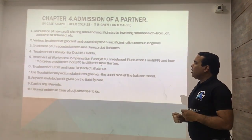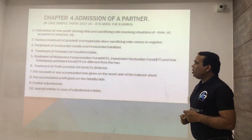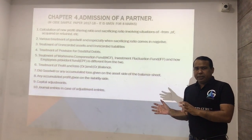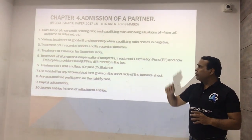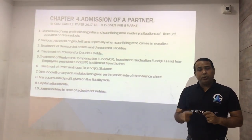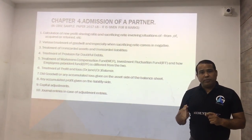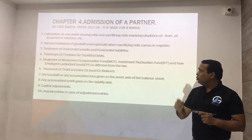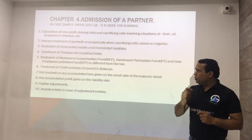The third point covers unrecorded assets and liabilities. These will appear in the Revaluation Account and the balance sheet. If an unrecorded asset exists, the entry is: debit Cash, credit Revaluation. For unrecorded liabilities, the entry is: debit Revaluation, credit Cash.